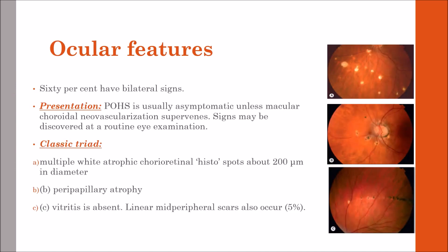Regarding ocular features, 60% of patients have bilateral signs. Presumed ocular histoplasmosis syndrome is usually asymptomatic unless choroidal neovascularization in the macular area supervenes. Signs may be discovered at a routine eye examination.